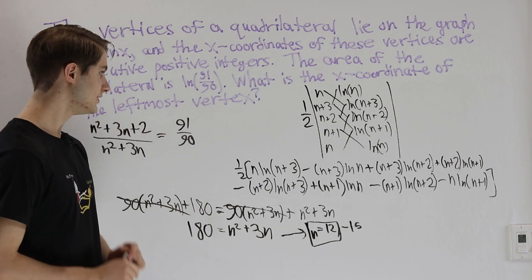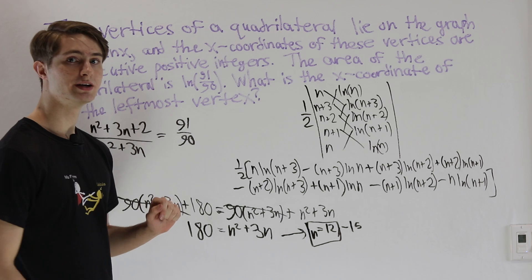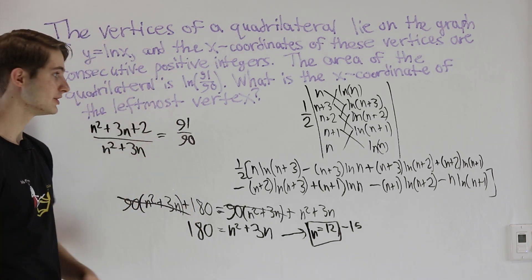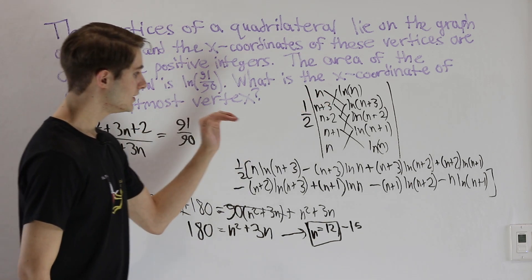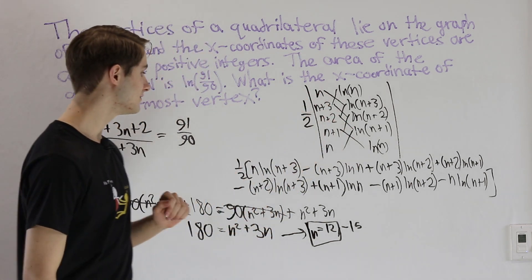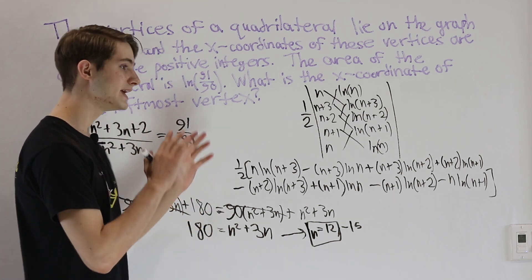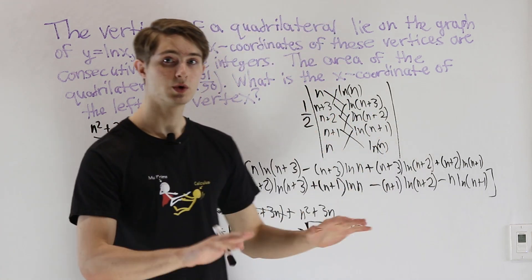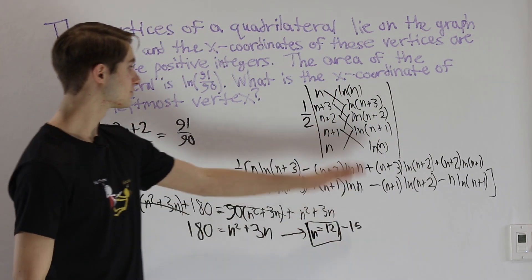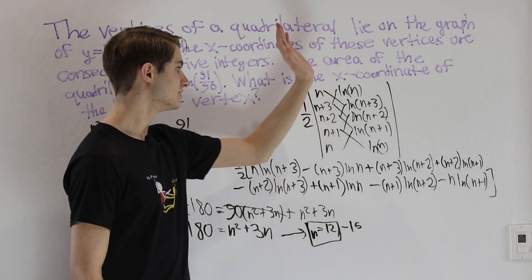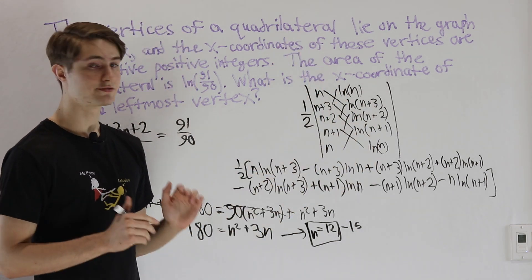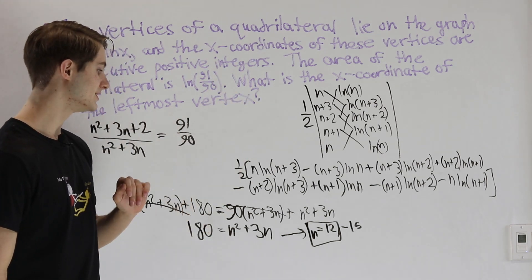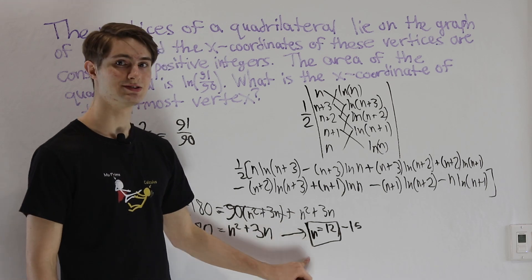We got here by using the shoelace formula to find the area of a quadrilateral defined by a natural log function. The shoelace formula is super useful because we can apply it any time we want to find the area of a polygon with coordinates in the xy-plane. Any set of coordinates in the 2D plane allows us to use the shoelace formula to find the area and reach our answer.